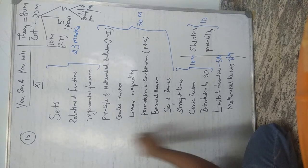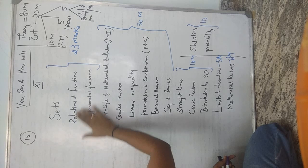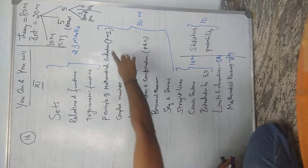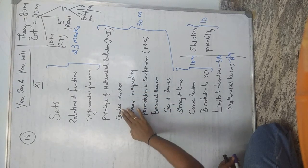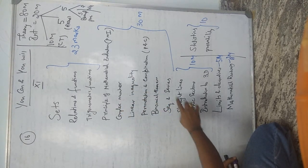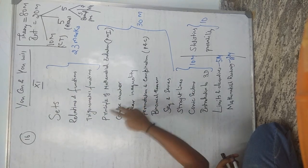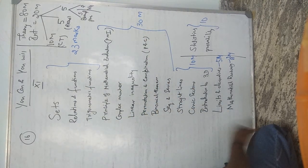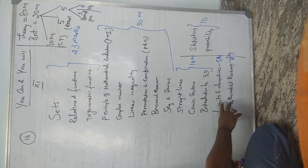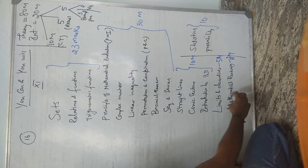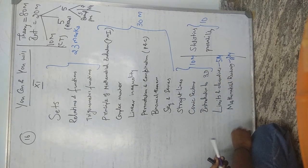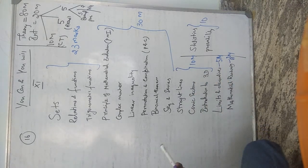The 16 chapters and their mark weightage: Sets, Relations and Functions, and Trigonometric Functions carry 23 marks. PMI (Principle of Mathematical Induction), Complex Numbers, Linear Inequalities, Permutations and Combinations, Binomial Theorem, and Sequences and Series together carry 30 marks. Straight Lines and Conic Sections carry some marks; Limits and Derivatives carry 5 marks; Mathematical Reasoning carries 2 marks; and Statistics and Probability carry the remaining marks.